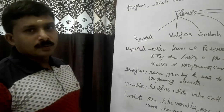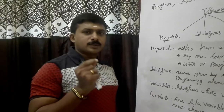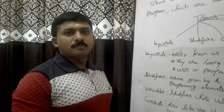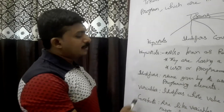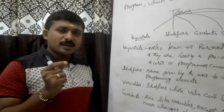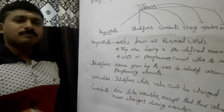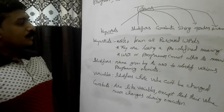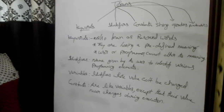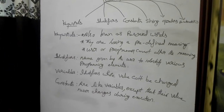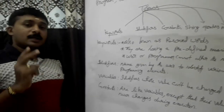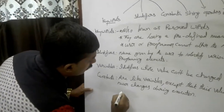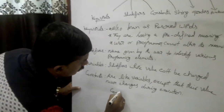Variables are identifiers whose value can be changed. Constants are like variables except that their value cannot be changed during execution. These are the definitions. Constants are defined using two methods — one method is using the const keyword.